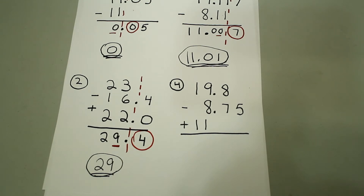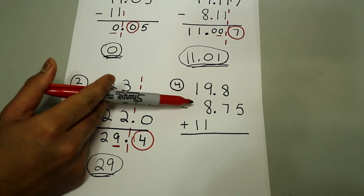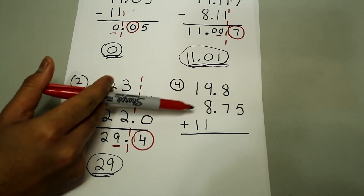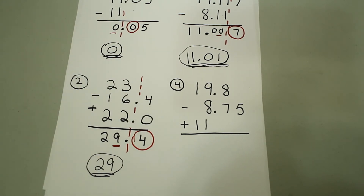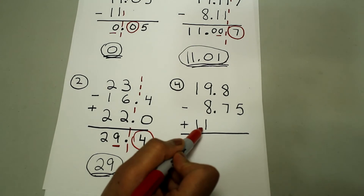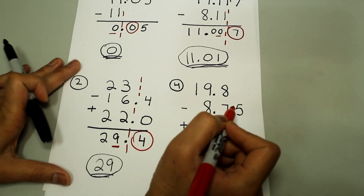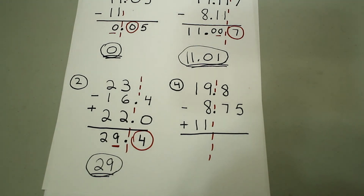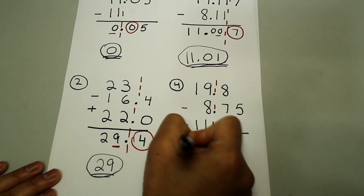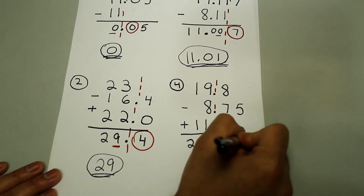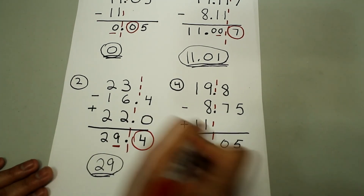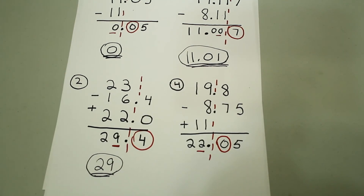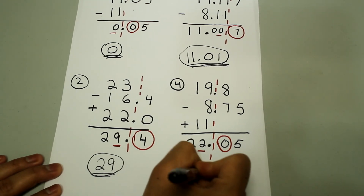Next we have 19.8 minus 8.75 plus 11. Going from left to right, you subtract first then add: 19.8 minus 8.75, then add 11 to that answer. The final answer still has the least number of decimal places. In this case, 11 has the least — no decimal places — so we draw the dashed line right after this 11. The result of the operations is 22.05, and we're rounding to the nearest whole number. Since 0 is less than 5, we're rounding down, so the final answer will be 22.